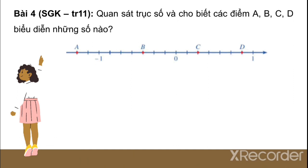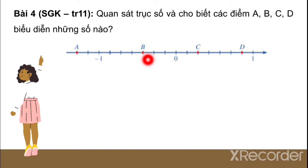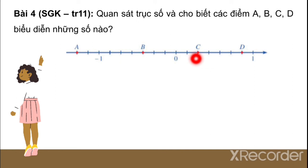Bài 4: Quan sát trục số và cho biết các điểm A, B, C, D biểu diễn những số nào. Từ 0 đến âm 1 ta đếm 1, 2, 3, 4, 5, 6, 7 phần. Điểm B là âm 3 phần 7. Điểm A là âm 9 phần 7 (thêm 2 phần nữa từ âm 1). Điểm C là 2 phần 7. Điểm D là 6 phần 7.